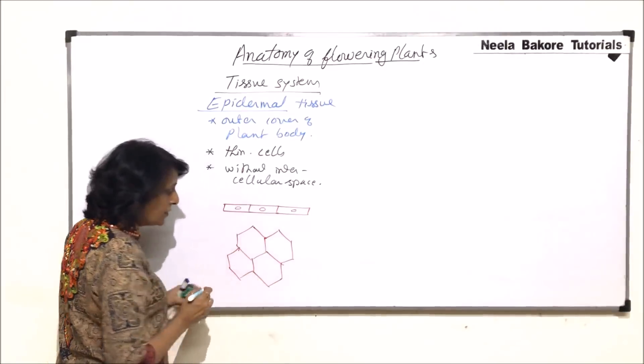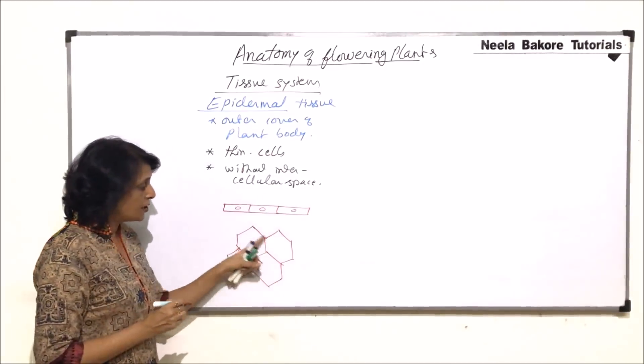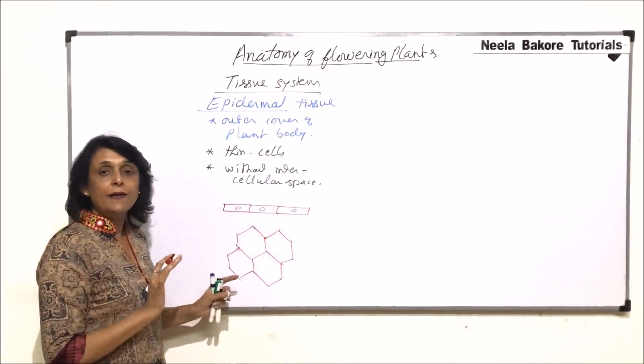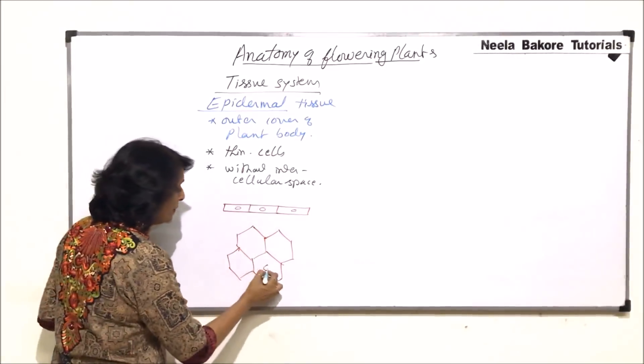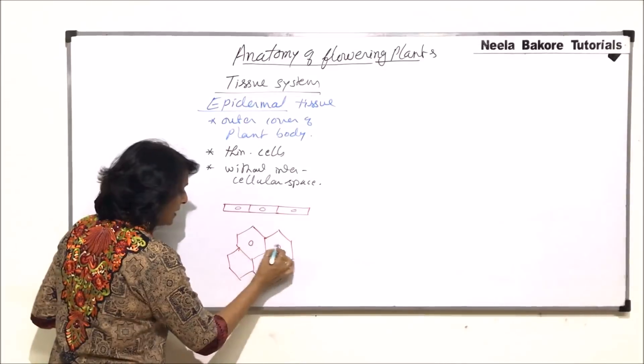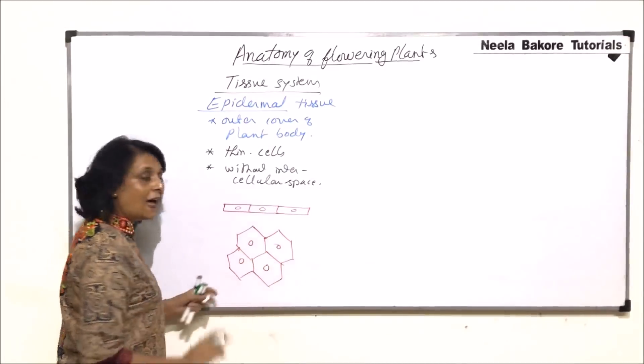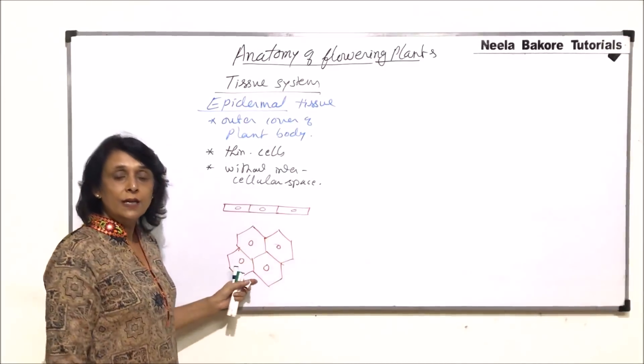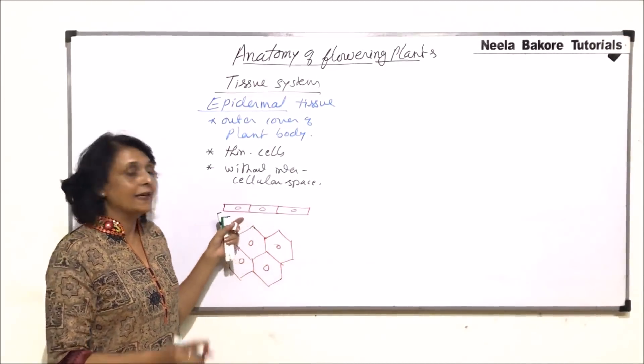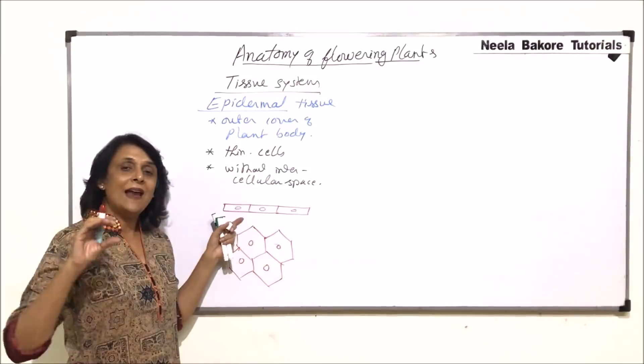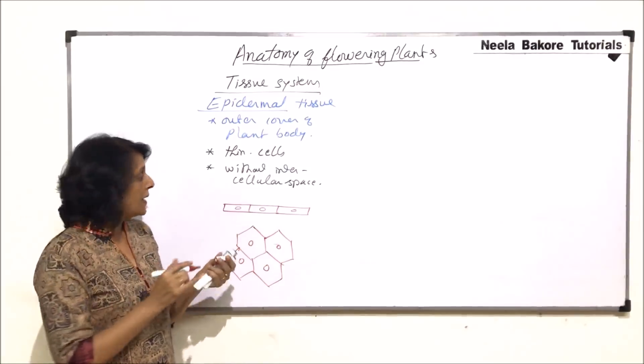If we look at these epidermal cells from the top, we find that they are either hexagonal or polygonal and they fit into each other perfectly. Because they fit into each other, we don't find any kind of space. So they have a large nucleus, vacuole, and are flat cells.